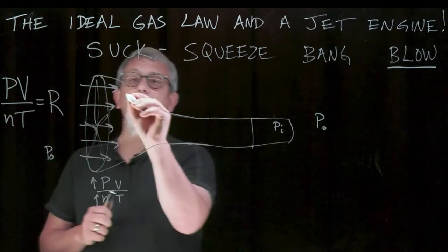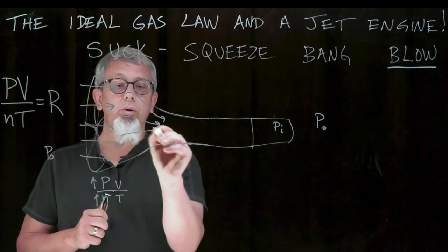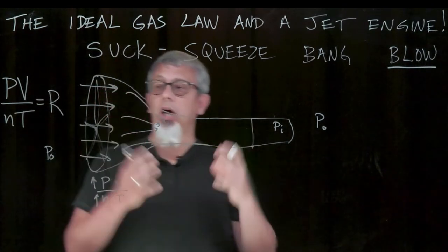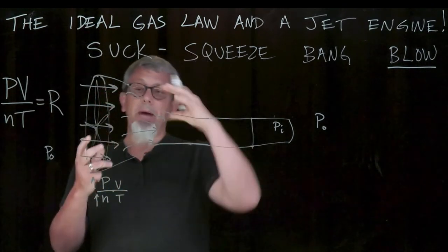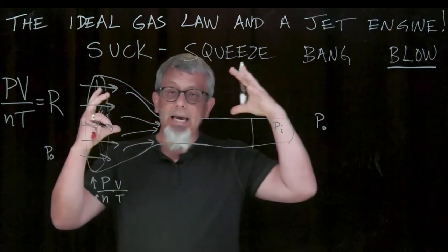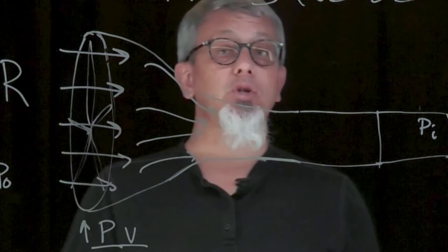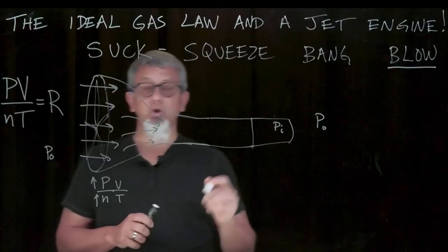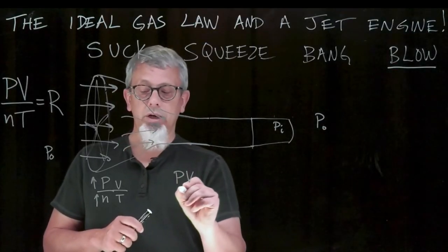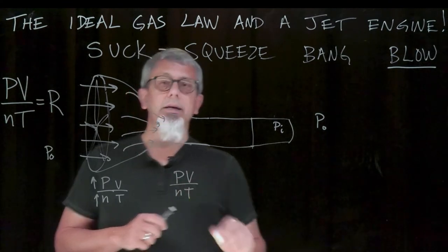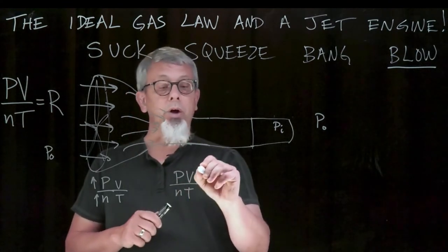Then we squeeze. We use a change in geometry. We use some baffles to sort of push things in. And we take all that air and we squeeze it down into a smaller and smaller space. There's the squeeze part. When we're squeezing, again, looking at PV over NT, squeezing makes the volume go down.